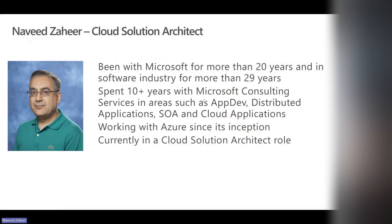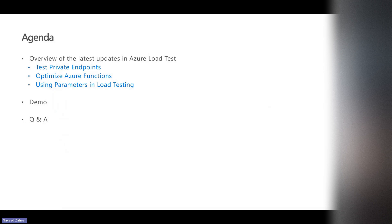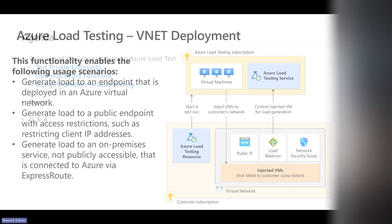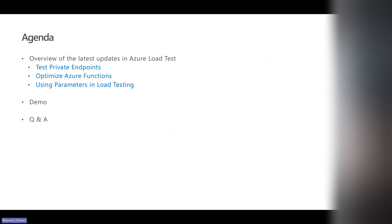Azure load testing is a service which has been in GA for quite some time, and they're adding some new features. I was working with a customer on some of those, so I thought let's talk about it. The features we're going to cover are: first, testing private endpoints — which includes not just private link endpoints but also VMs and AKS running in a VNet. Second, how to optimize an Azure function using a built-in feature that uses Azure load tests. And third, how to use parameters in load testing, and how managed identity makes it simpler to get parameters from a key vault.